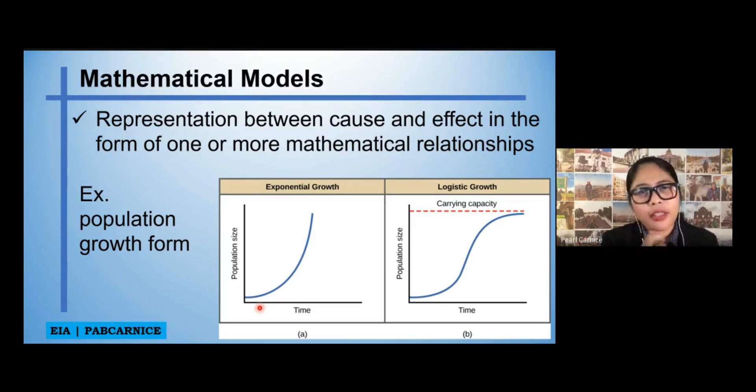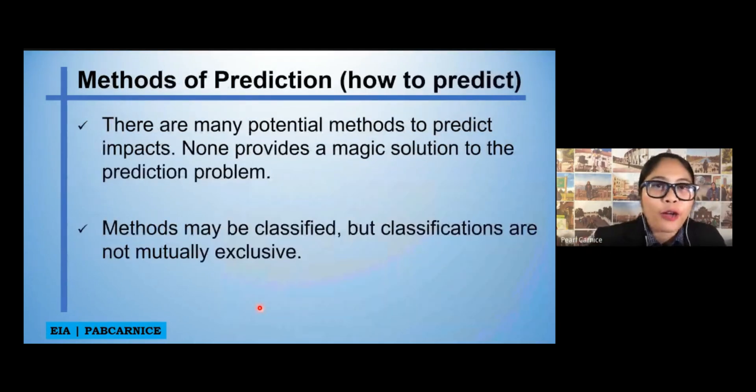You can do a mathematical model of that. At the same time, you can also model as to, let us per se, how much it would take you to extract. You can also model as to the volume, the volume of minerals that you can extract on a specific ore in comparison to their quality per se. So, that's how you can use mathematical models, representation between cause and effect in a form of one or more mathematical relationship. So, let's go now to the methods of prediction or how to predict.